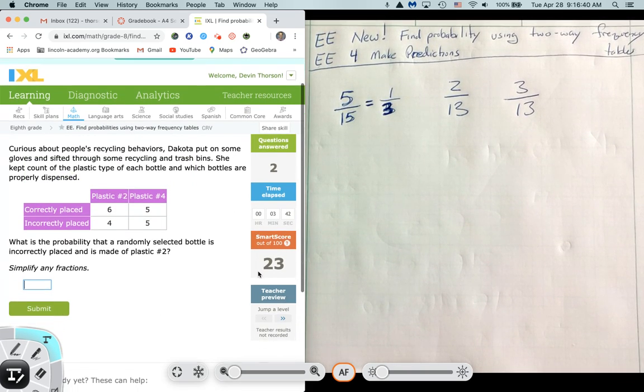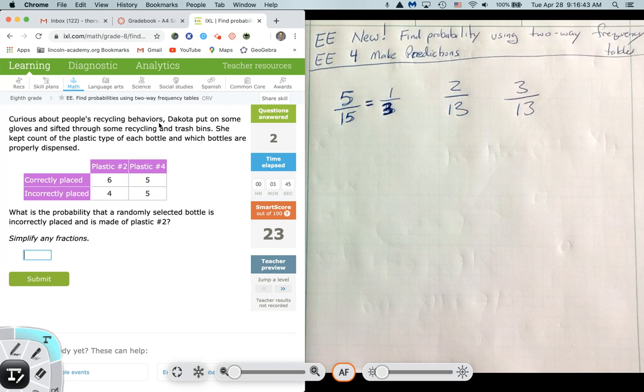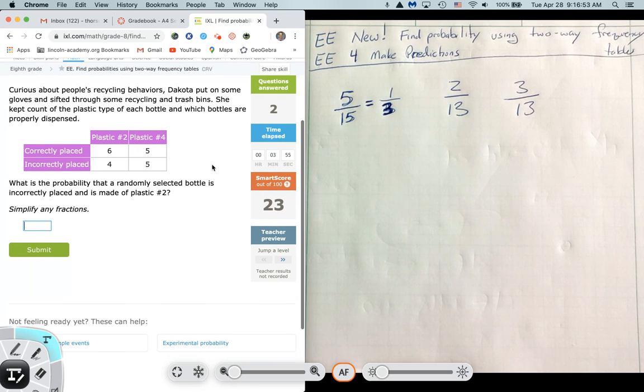I will do one more, and then I'm going to talk about the other section here. Curious about people's recycling behaviors, Dakota put on some gloves and sifted through some recycling and trash bins. She kept count of the plastic type of each bottle and which bottles are properly dispensed. So in other words, she found six correctly placed bottles that were a plastic of number two type. She found five that were correctly placed that were a plastic of number four type. She found four that were incorrectly placed that were a plastic of number two type. And she found five that were incorrectly placed that were a plastic of number four type.